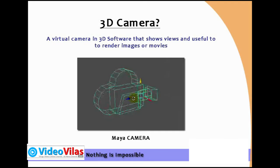The next question is: what is a 3D camera? A virtual camera in 3D software that shows views and is useful to render images or movies. It is a virtual camera, not a real camera.